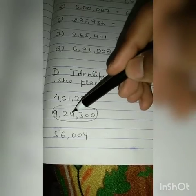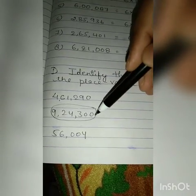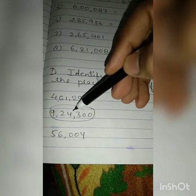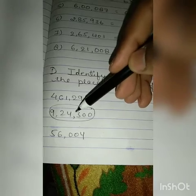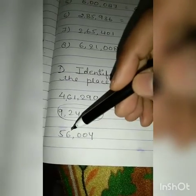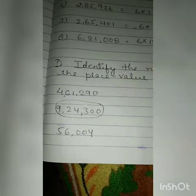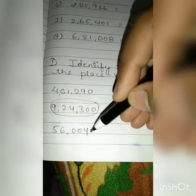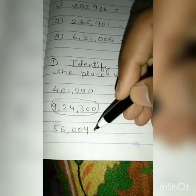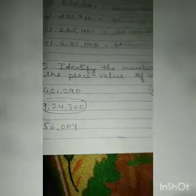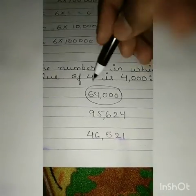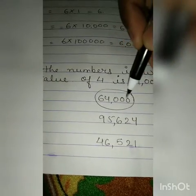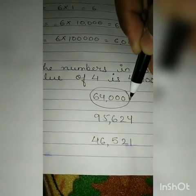Second number is 9,24,300. Here the 4's place value is 1000, so we will circle this number because 4 is having 1000 place value. Then the next number is 56,004 — here 4 is at the 1's place, so we will not circle this number. Then next is 64,000 — here the place value of 4 is 1000, so we will circle this number.